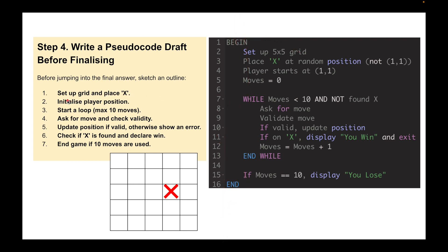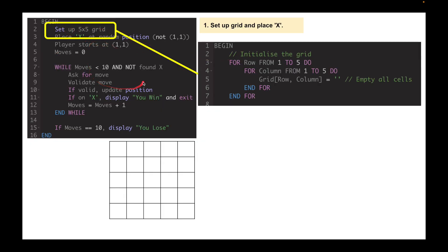Set up a grid and place X. Set up 5x5 grid. Begin and end the pseudocode. Initialize player position. Place X at random position, not 1-1. Player starts at 1-1. Moves equals 0. While moves is less than 10 and not found X, ask for move, validate the move. If the move is valid, update the position. If on X, display You Win and exit. Moves equals moves plus 1. End the while loop. If moves equals 10, display You Lose. End. That's basically pseudocode with some pseudocode that makes sense and some that's completely made up. But this is basically what is happening. I've put it there as 7 bullet points. There they are, has some very basic pseudocode. But we need to make this a little bit more valid. We'll pick up some marks. We won't pick up the 15 for doing that.